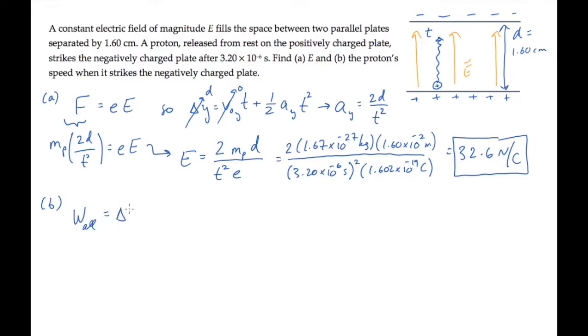The work done by all forces equals the change in the proton's kinetic energy. The only force doing work on the proton is the electric force. It's charge times the electric field, and that force is parallel to the displacement. So the work is the force times the distance that it moves, that's d, and that's equal to the final kinetic energy minus the initial, which is zero.